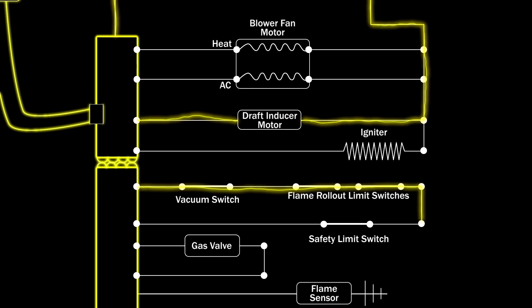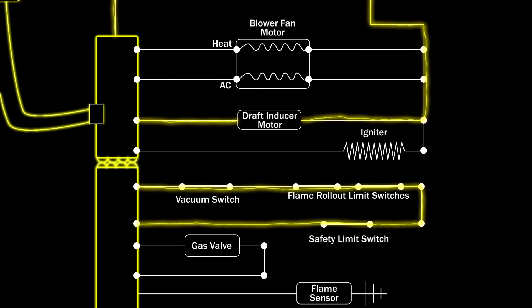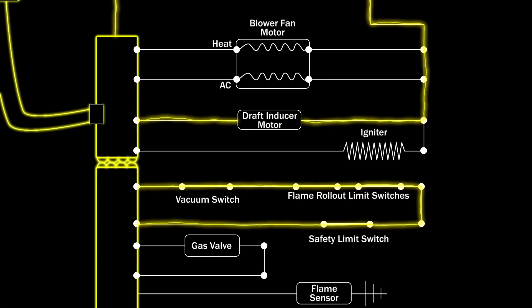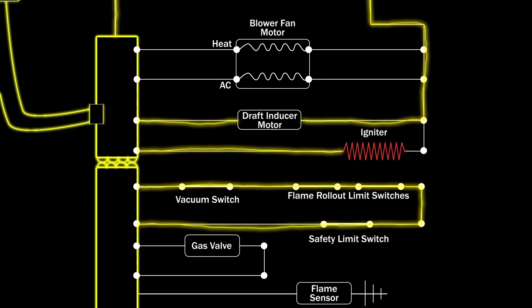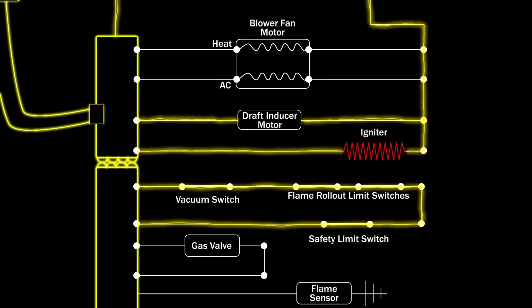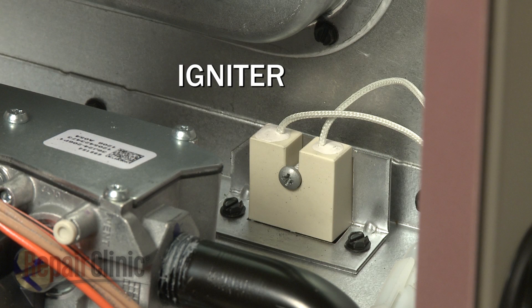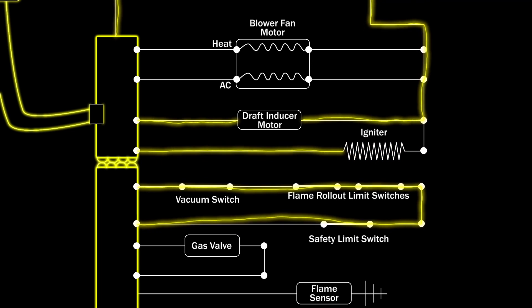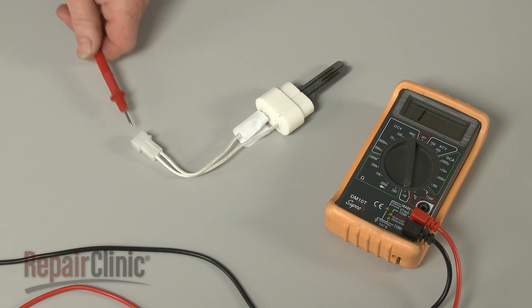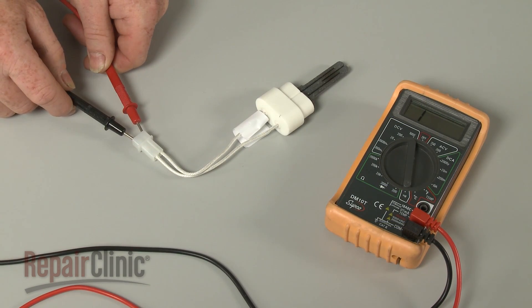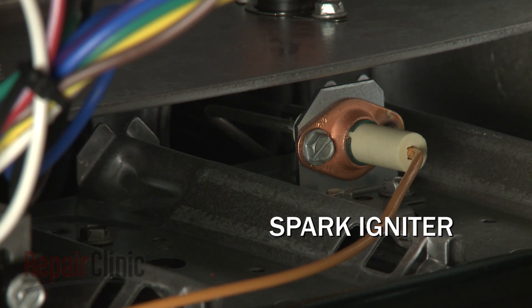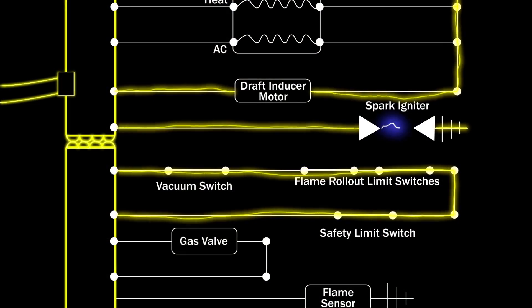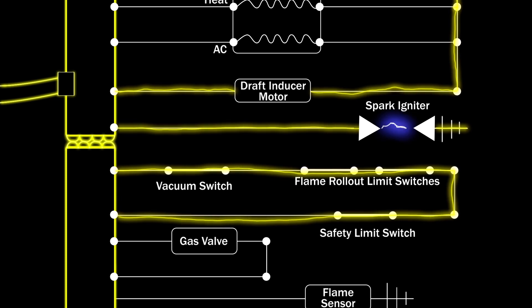Once the vacuum switch closes, 24 volts will travel through the switch and one or more limit switches, allowing the control board to continue the startup. The control board now sends 120 volts to a glow bar style igniter, depending on the model. A defective igniter will halt the ignition sequence and prevent the furnace from heating. A glow bar style igniter can be tested for continuity to help determine if the part is functioning. Be aware that some models will use a spark igniter instead. Spark igniters will also receive voltage from the control board, but the amount of voltage is greatly increased and will pulse to create the spark.